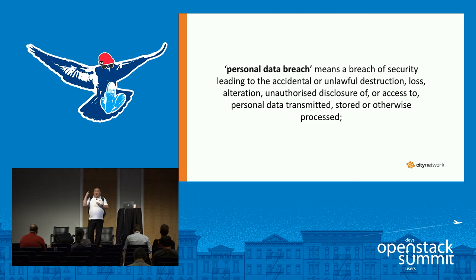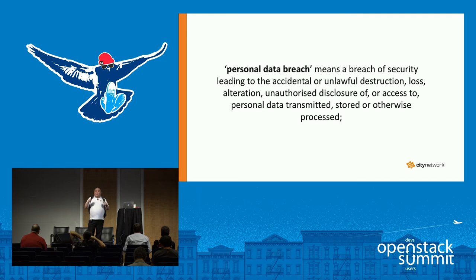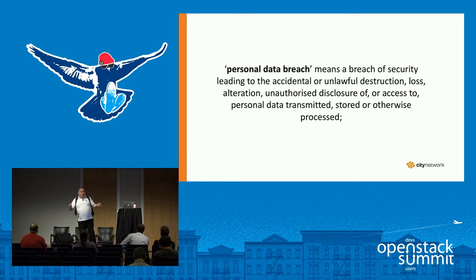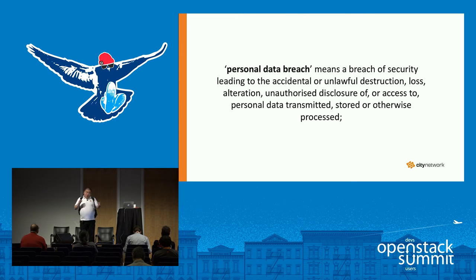It might even be accidental and it's still a personal data breach. Loss, alteration, access to, storage — this is important. Because if you allow personal data to be processed in such a way that you make a copy and just happen to send it somewhere that is not legal, that's not allowed — that's being processed in the wrong way, and that's a personal data breach. Even if no human being has seen the information, it's still a breach.